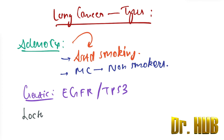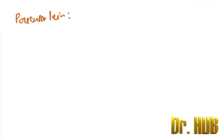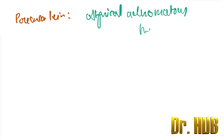Next, let's look at the location — it is peripheral. Looking at the precursor lesions, it involves atypical adenomatous hyperplasia and also adenocarcinoma in situ.